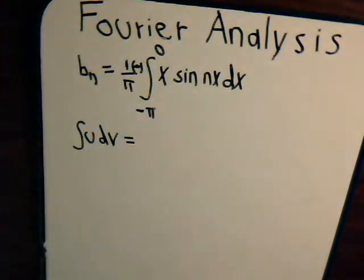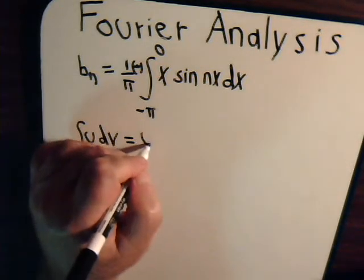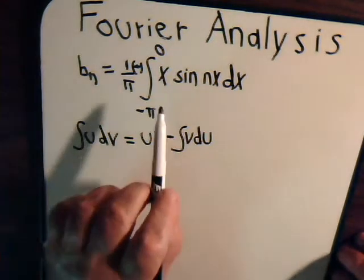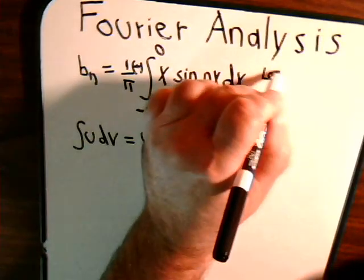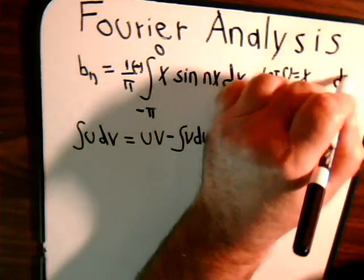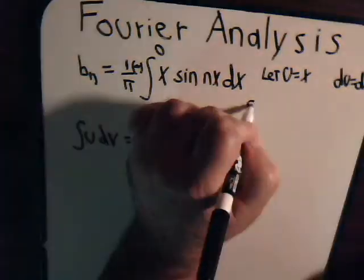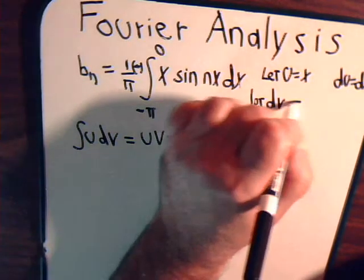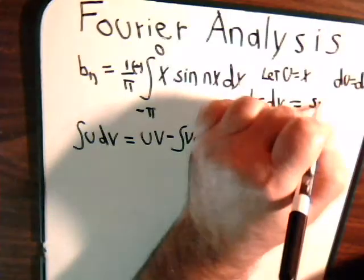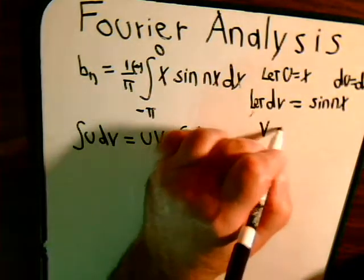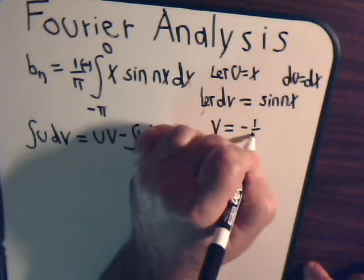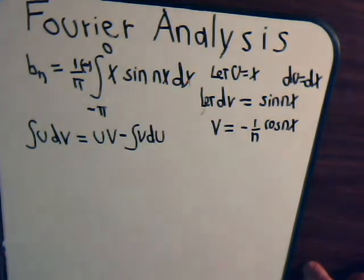Here, again, we have one function times another function. So, that's setting us up, obviously, to integrate by parts. And that formula is the integral of U dV equals UV minus the integral of V dU. And again, we choose let U equal X, and let dV be equal to the sine of NX. Meaning, the integral of the sine is minus 1 over N times the cosine, so this would be minus 1 over N times the cosine of NX.